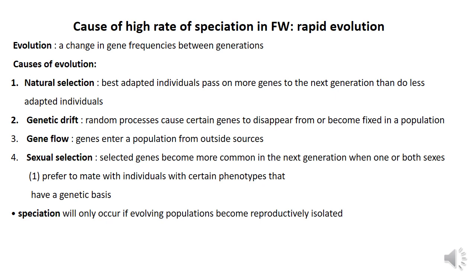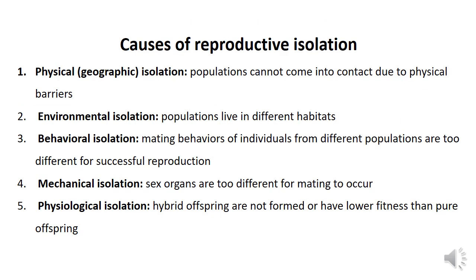Speciation will only occur if the evolving population becomes reproductively isolated. The causes of reproductive isolation include: physical or geographic isolation, where populations cannot come into contact due to physical barriers; and environmental isolation, where populations live in different habitats.